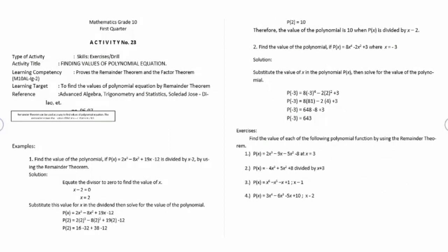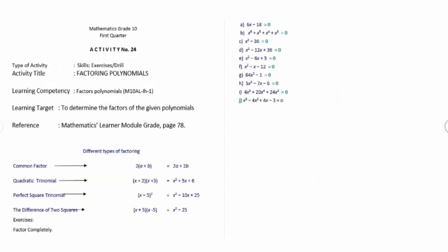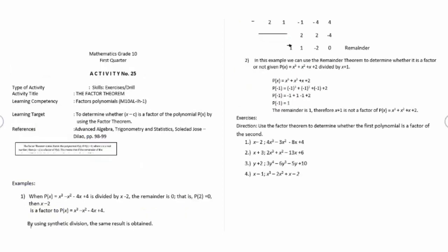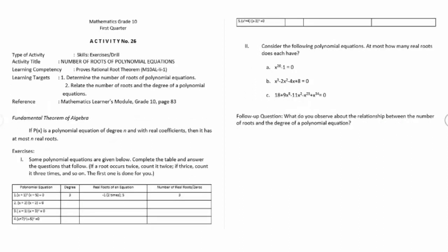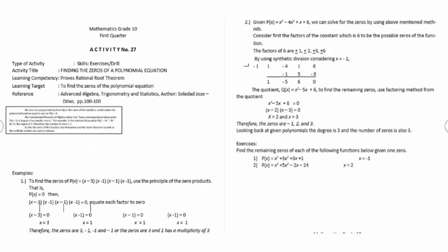Activity number 23: finding values of a polynomial equation. Activity number 24: factoring polynomials. Activity number 25: the factor theorem. Activity number 26: number of roots of a polynomial equation. Activity number 27: finding the zeros of a polynomial equation.